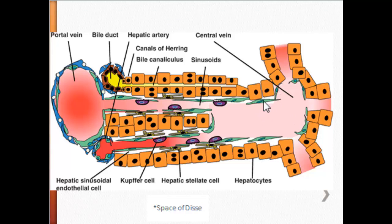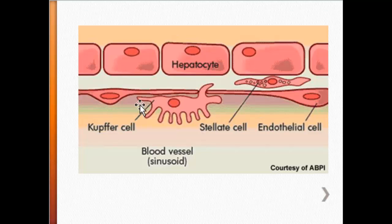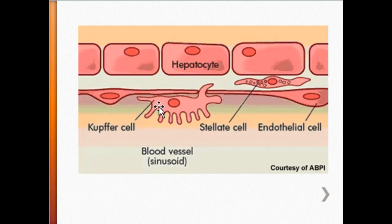So naturally the next question is: where are our Kupffer cells, our resident macrophages? Well, they line the sinusoid, specifically on the hepatic sinusoidal endothelial cell. You can see in this slide here is your endothelial cell, and here is your Kupffer cell lining the sinusoid right here.